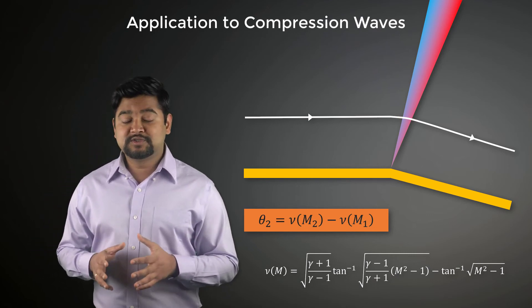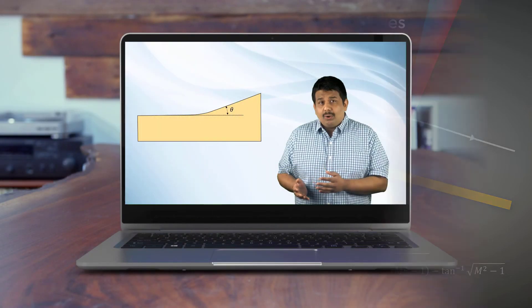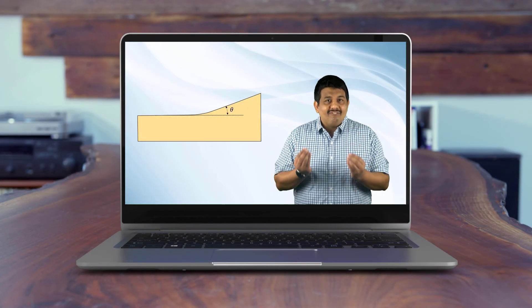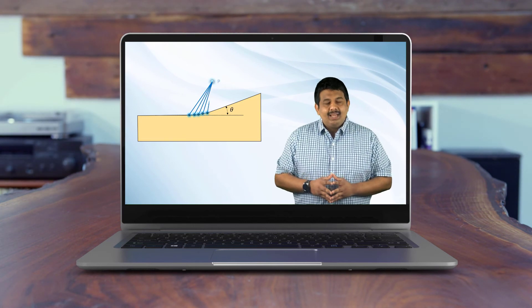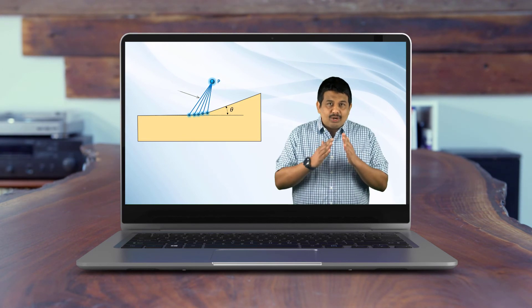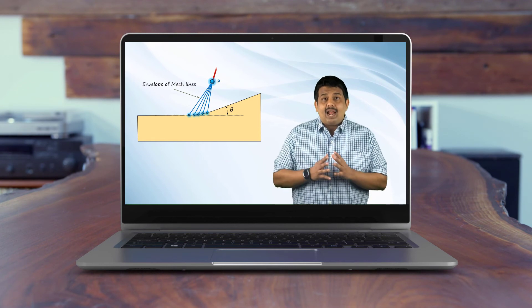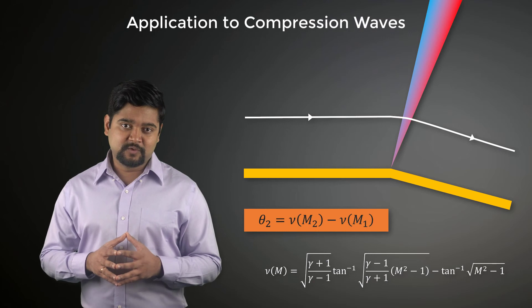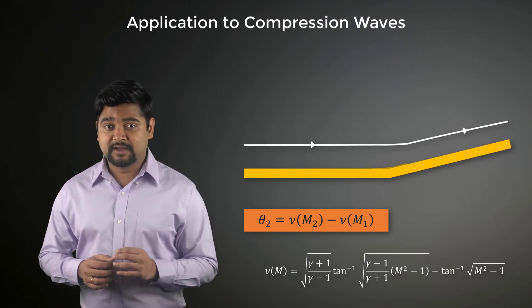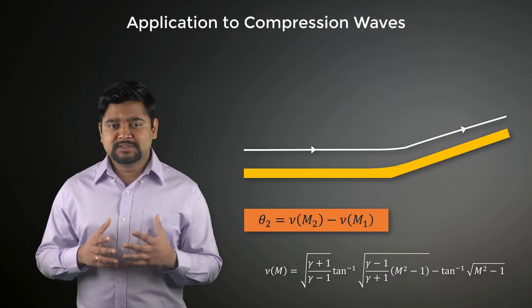When we discussed oblique shocks, we did consider a situation of supersonic flow compression through an envelope of Mach waves over a curved corner. But we did not offer any theory at that time. Well, it turns out that the near wall compression flow across a Mach wave fan can be analyzed using the same Prandtl-Meyer function approach for expansion waves but with the opposite sign as shown here.